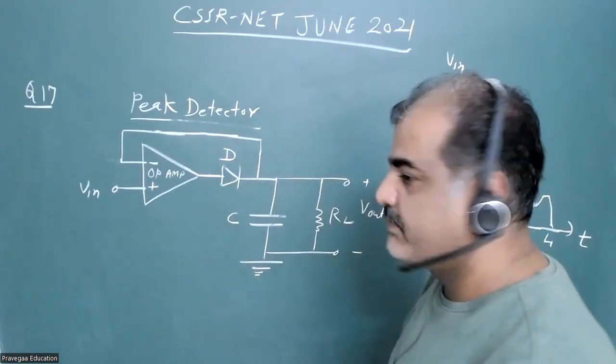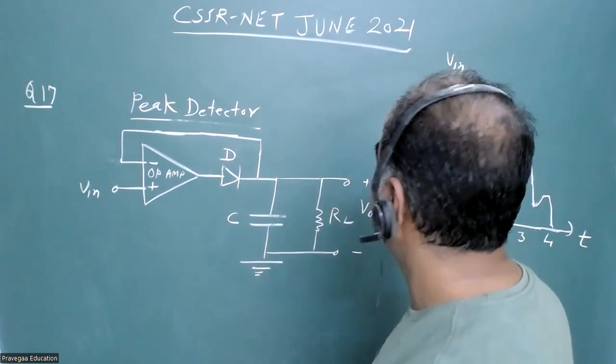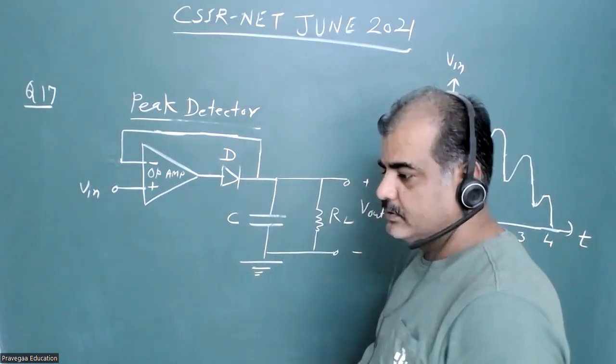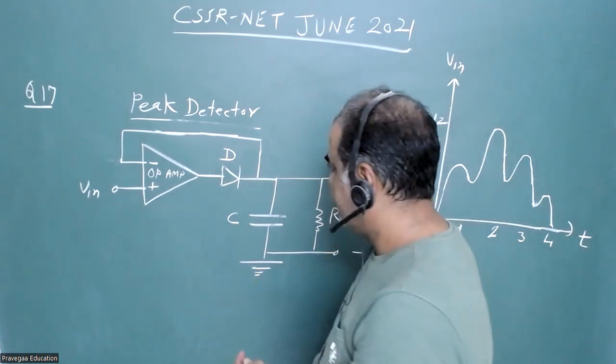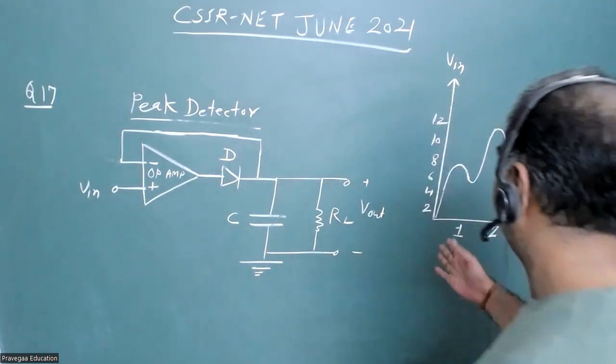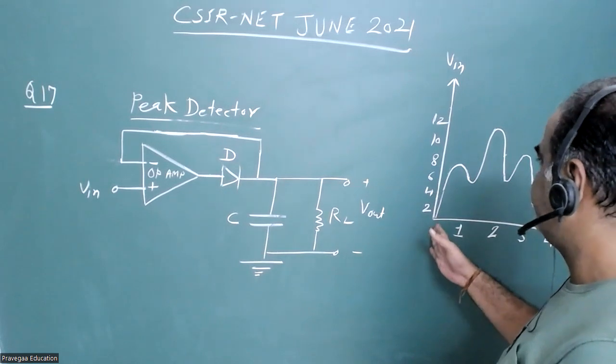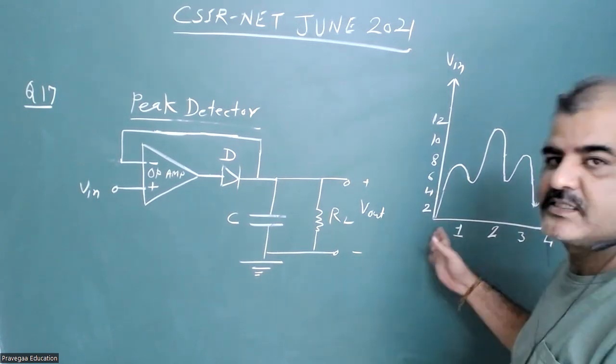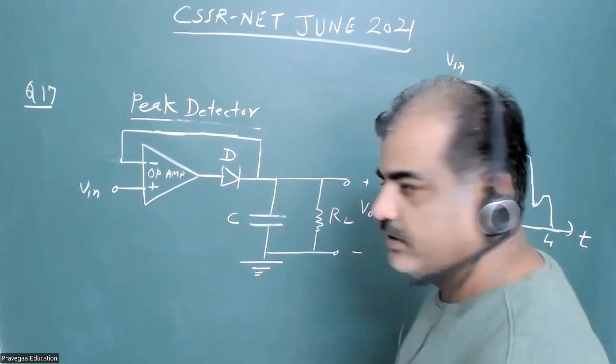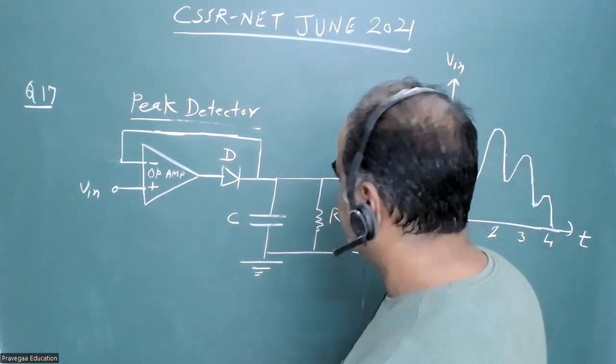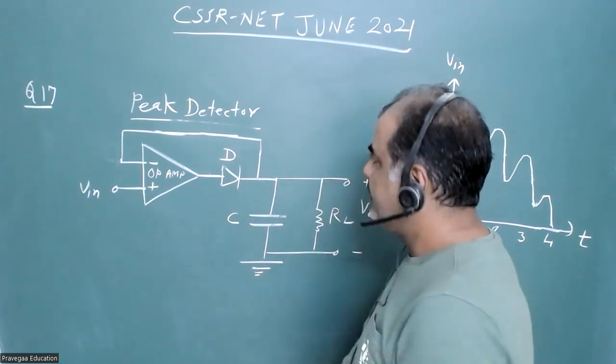Hello everyone, I am solving CSIR NET June 2021 questions. In this question, they have given one op-amp based circuit and they are applying some input across the two inputs of this op-amp, and they are asking what is the form of output.